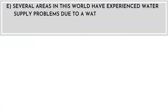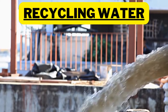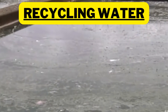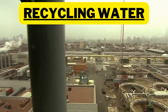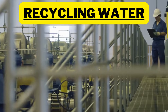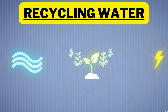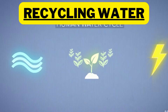Last question: Several areas in this world have experienced water supply problems due to a water crisis. As an officer in the water supply department, suggest two alternatives to provide water supply. Recycling wastewater is one of the ways to help reduce the problem of water shortage. Singapore, for example, has limited water supply. The country uses modern technologies to recycle sewage into drinking water and for industrial uses.